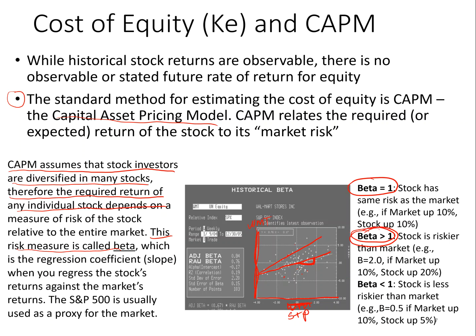Beta greater than one means the stock is riskier than the market. If the beta is less than one, the stock is less risky — safer than the market. Think of a beta of 0.5: when the market is up 10%, you'd expect that stock to be up 5%, and when the market is down 10%, that stock would tend to be down 5%. Beta is the key to the CAPM model since it tells you how risky your stock is relative to the market. The model assumes most investors are rationally diversified, so they don't care about the total risk measured by standard deviation — they just need to know how sensitive the stock is relative to the market.